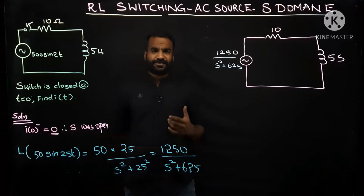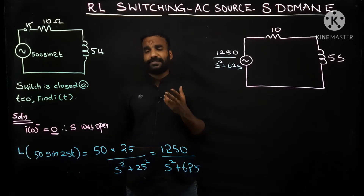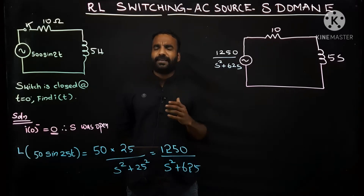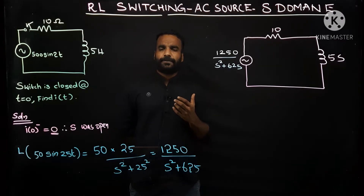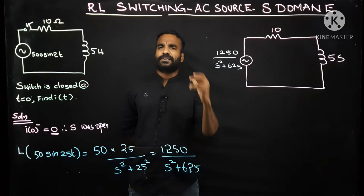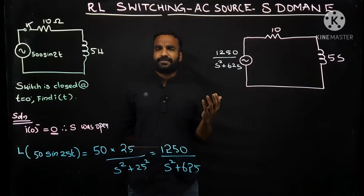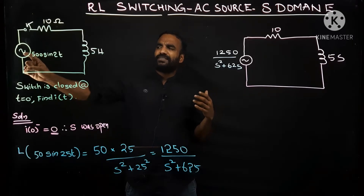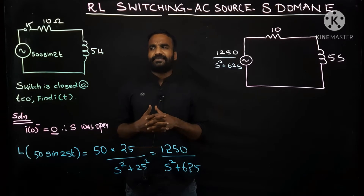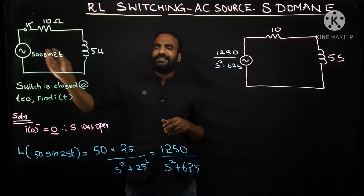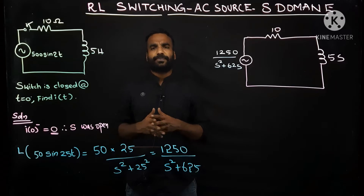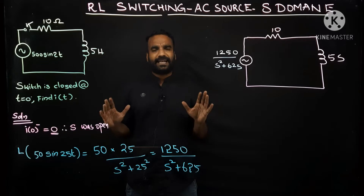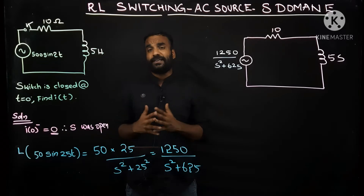Welcome back to our lecture series on circuits and networks. In today's class we are coming to a new area. In the syllabus, switching problems are conventionally classified as DC case and AC case. DC and AC means only the source is changing — in AC analysis we consider an AC source, whereas previously we were considering a purely DC source. All the remaining calculations are exactly the same in both cases.